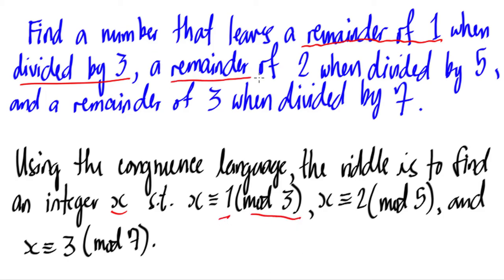It leaves a remainder of two when divided by five, so the remainder is here, the divisor is here. And also it gives us a remainder of three when it is divided by seven. So we're going to find that particular x value based on this system of linear congruences.